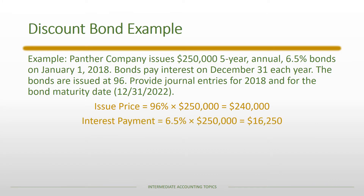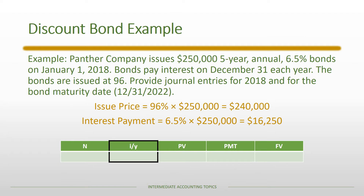As we move through time, we record the payments. The contractual interest payment rate is 6.5% applied to the par value, making each payment $16,250. We need to solve for the yield to determine the amount of amortization each period. This is a five-year annual bond, so the number of periods is five.